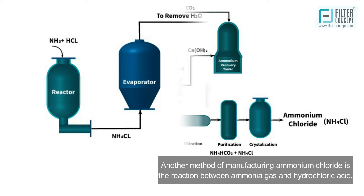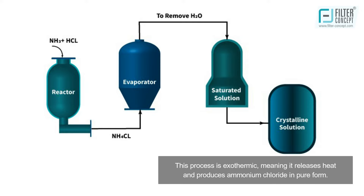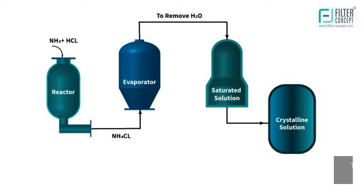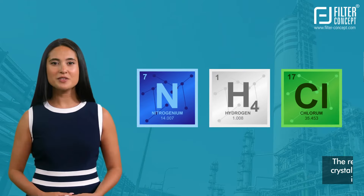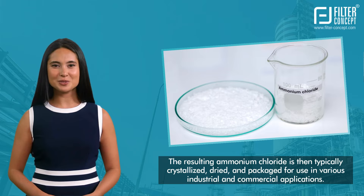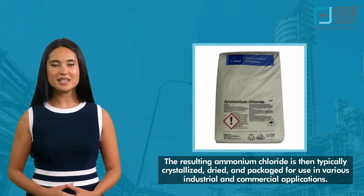Another method of manufacturing ammonium chloride is the reaction between ammonia gas and hydrochloric acid. This process is exothermic, meaning it releases heat and produces ammonium chloride in pure form. The resulting ammonium chloride is then typically crystallized, dried, and packaged for use in various industrial and commercial applications.